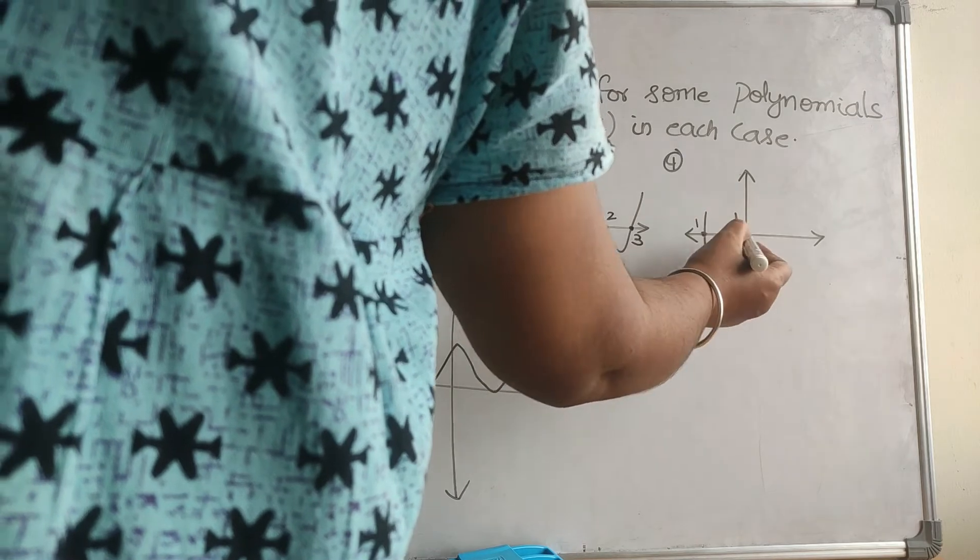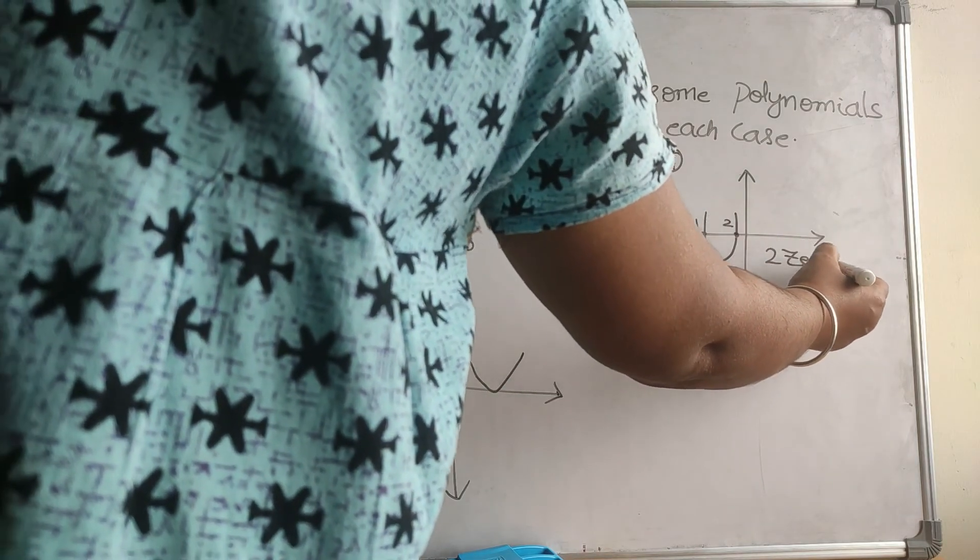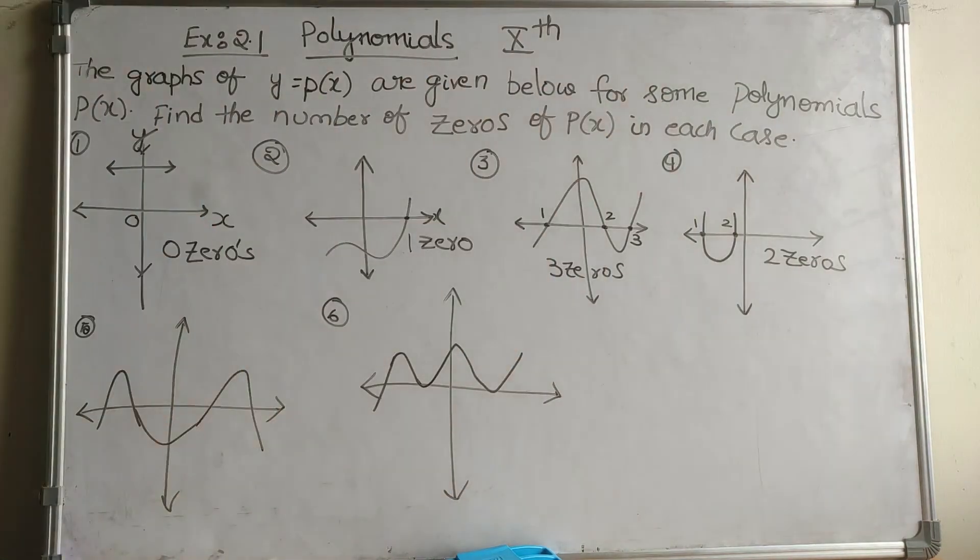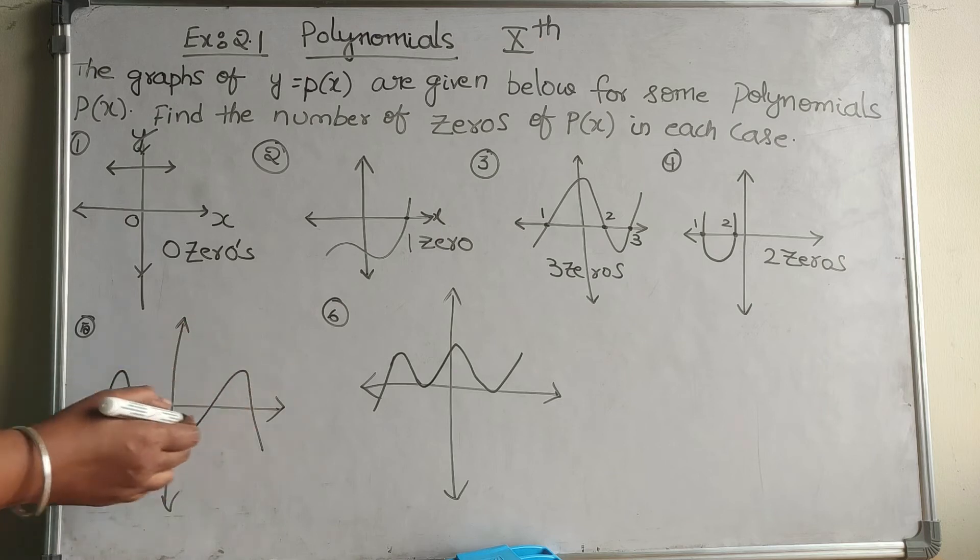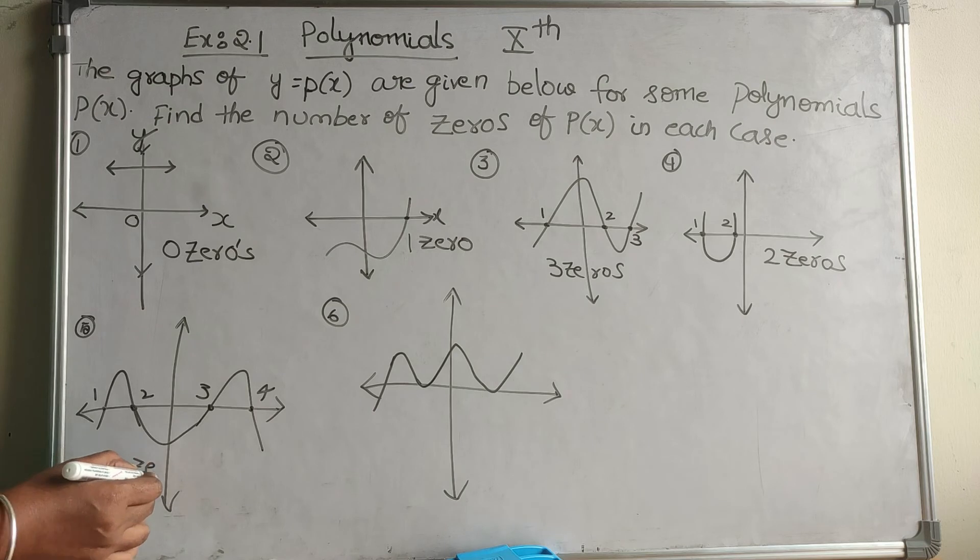In the next one, this is in a U-shape—one is here and one is here, so it has two zeros. And the next picture, if you see, it is like two U-shapes where this is one, this is two, this is three, and this is four. There are four zeros in this picture.